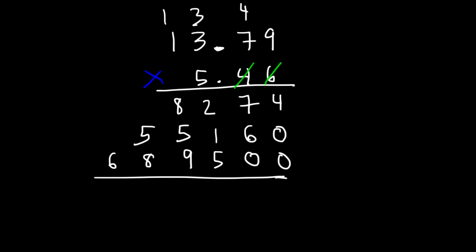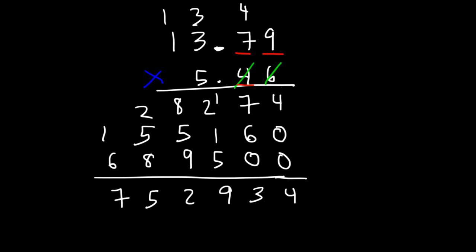So now, let's add the numbers. This is 4. 7 plus 6 is 13. Then 1, 2, and 1 — that's 4, plus 5, is 9. 8 plus 5 is 13, plus 9, that's 22. 8 and 2 is 10, plus 5, that's 15. And 6 and 1 is 7. Now, where should we put the decimal? Looking at the original numbers, the first number has 2 numbers to the right of the decimal point, and the second number also has 2. So therefore, our final answer should have a total of 4 digits to the right of the decimal point. Which means our answer is 75.2934.